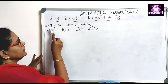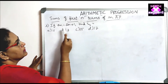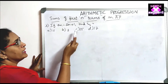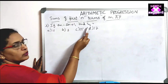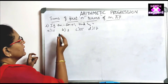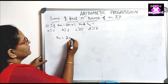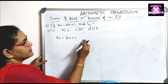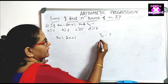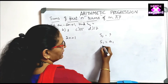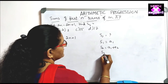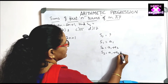Next question: if AN equals 2N plus 1, find S3. This differs from the previous question where SN was given. Here AN is given. We use the fact that S3 equals A1 plus A2 plus A3. We need to know the first three terms, so we substitute N equals 1, 2, and 3 into the formula.